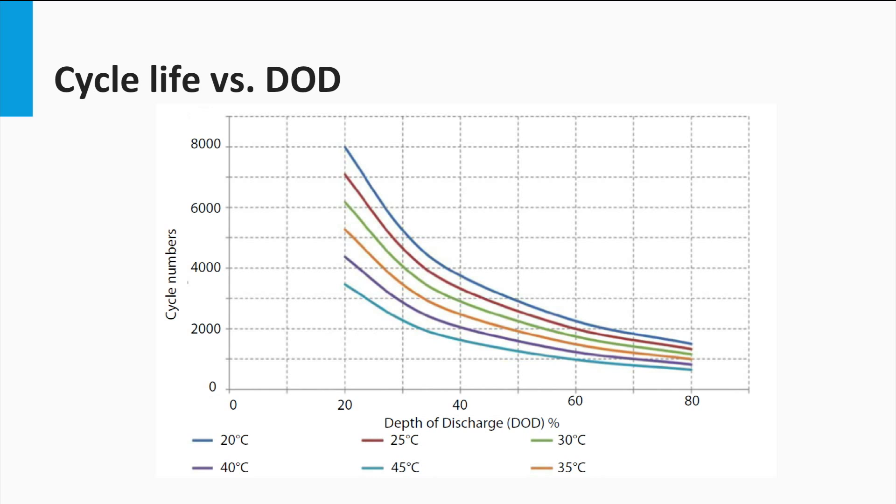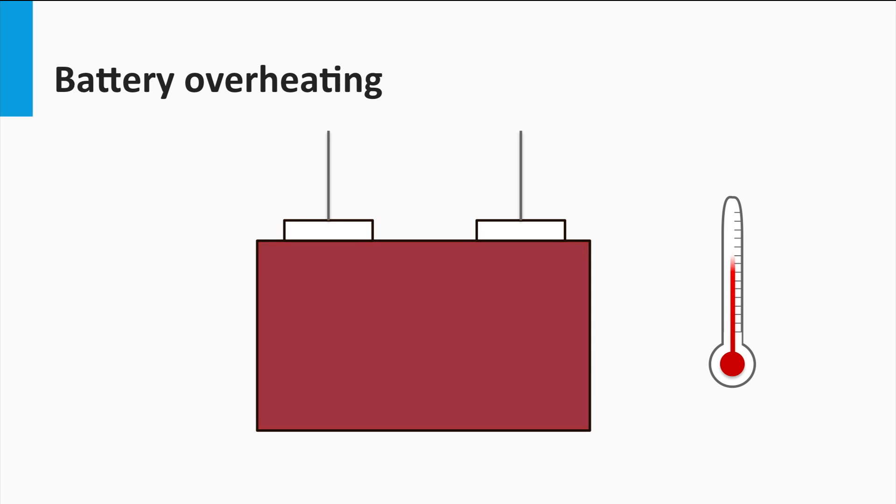However, such a higher cycle life would also mean that those additional cycles you gain can only help you for a smaller depth of discharge. Thus, it could be said that the battery will last longer if the average DOD could be reduced over its normal operation. Also, battery overheating should be strictly controlled. Overheating could occur due to overcharging and subsequent overvoltage of the lead-acid battery. We will learn more about voltage and charge control of the battery in the next video.